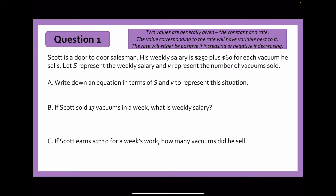Whenever you encounter questions that ask you to write a linear equation to model a real life example, what you often get is two numbers or two values given. One of these values will always be a constant value, which will generally be either the starting cost or the initial amount. The other one will correspond to the rate, which tells you how much the value will either increase or decrease. Depending on whether it increases or decreases, we give that a positive or negative value. The value that corresponds to the rate is generally the number we assign the variable or letter next to.